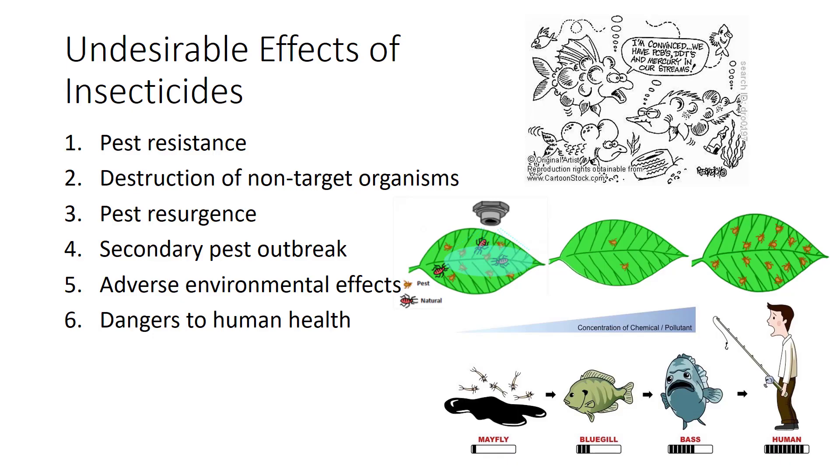Although pest populations are suppressed by insecticide use, undesirable effects include the following. First, selection for insects that are genetically resistant to the chemicals.